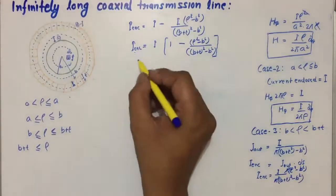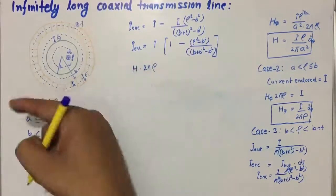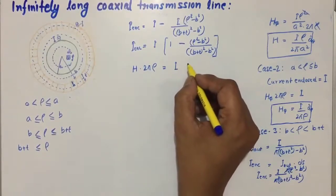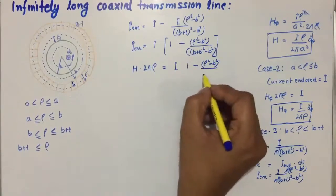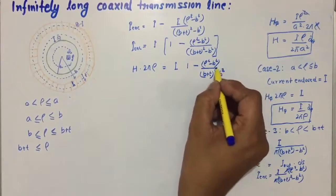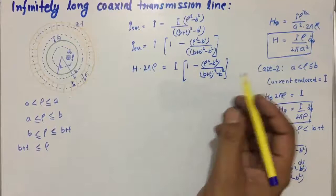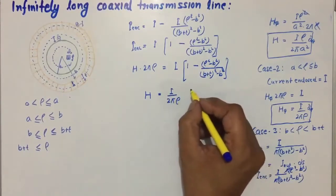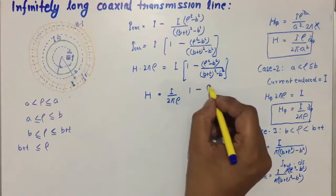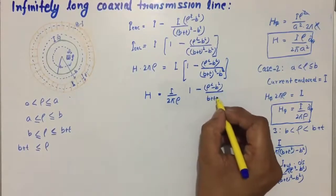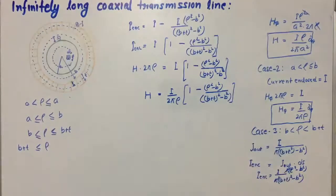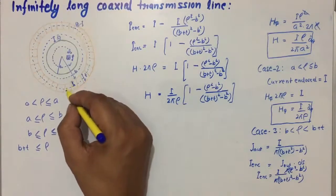To find H in Case 3, we apply H · 2π ρ equals I enclosed. So H equals I/(2πρ) · [1 − (ρ² − B²)/((B+T)² − B²)], in the A-phi direction. This applies when the observer lies inside the second conductor, for ρ between B and B plus T.